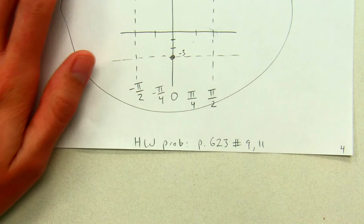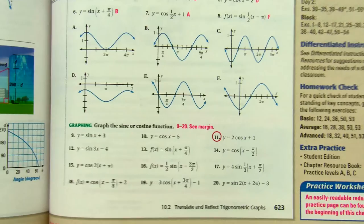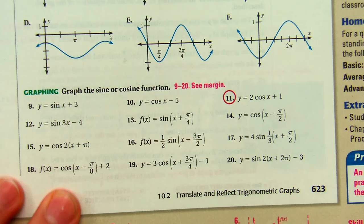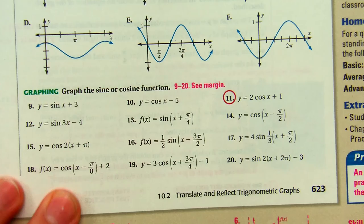Alright everybody, here are the problems you need to do for homework. I'll project them. Page 623, number 9 and 11. You're supposed to graph the sine and cosine function. And good news is, this one doesn't have a tangent function, so we can finish that in class. Number 9, y equals sine of x plus 3. And number 11, y equals 2 cosine of x plus 1. Alright, I'll see you in class.